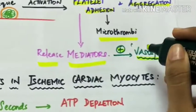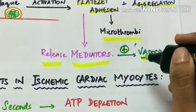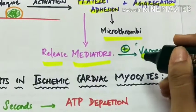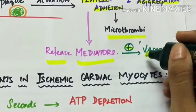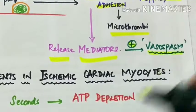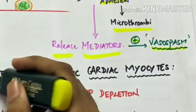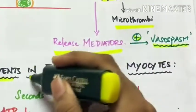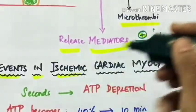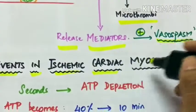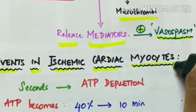These cytokines induce vasospasm. This is the pathogenesis behind myocardial infarction. Next, the events in ischemic cardiac myocytes.